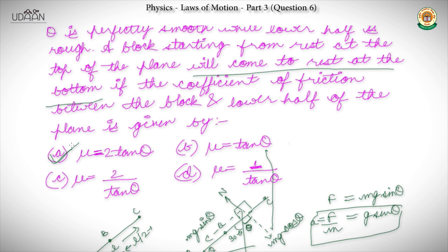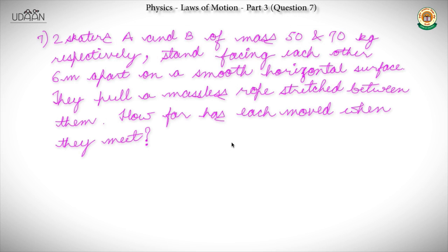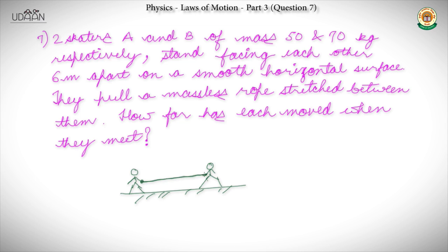Now we go to question 7. Question 7 says: two skaters A and B of mass 50 kg and 70 kg respectively stand facing each other 6 meters apart on a smooth horizontal surface. They pull a massless rope stretched between them. How far has each moved when they meet?